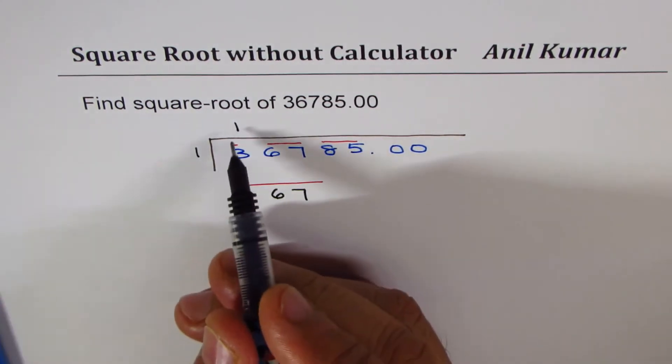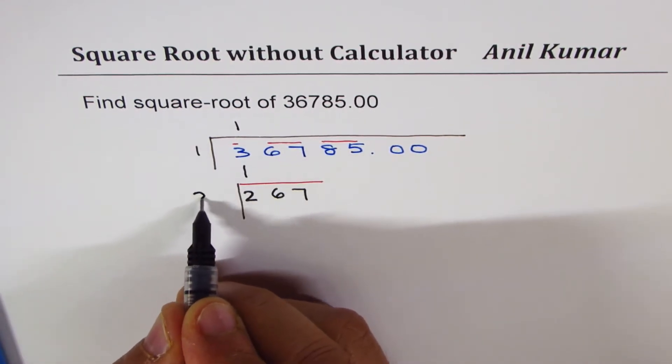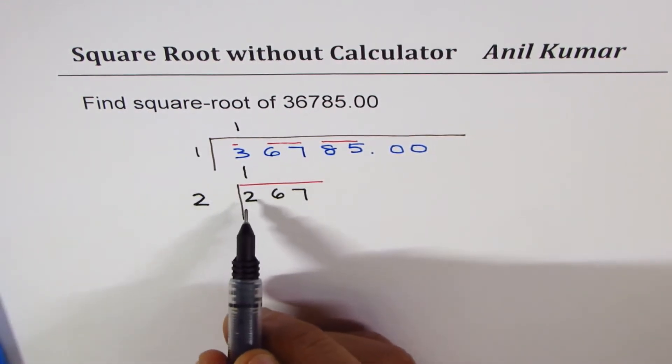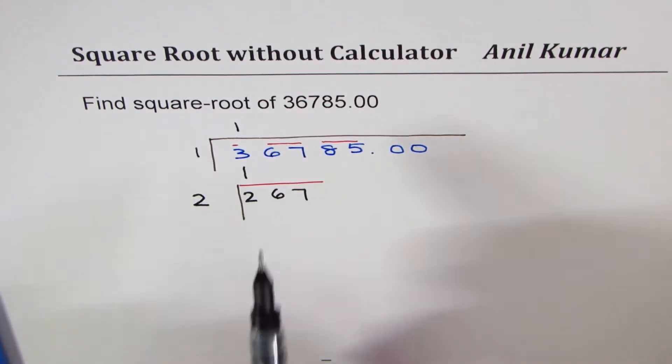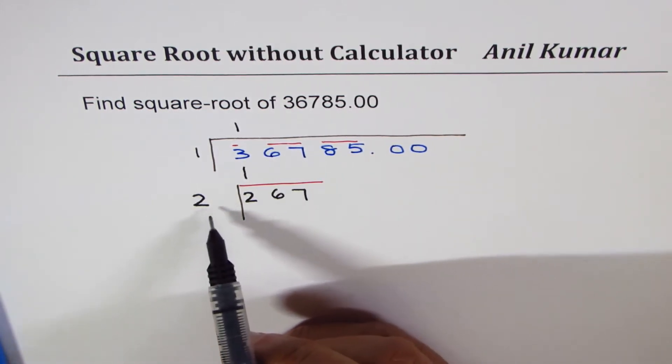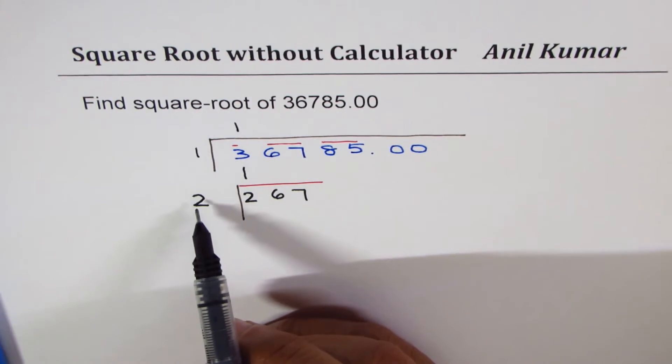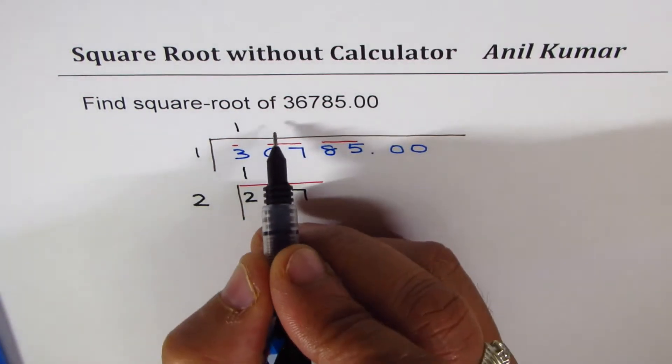Now this step is kind of critical. What we do is we double this number, so one times two is two. We have a number 267 which is fairly large, so we can try with nine. Nine times nine will be 81 and eight carry forward, nine times two is 18 plus eight is 26. We are very close so we can try nine.